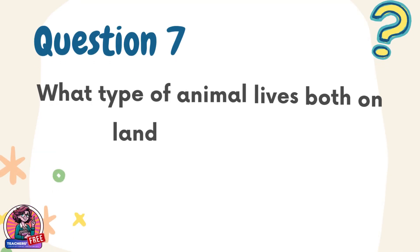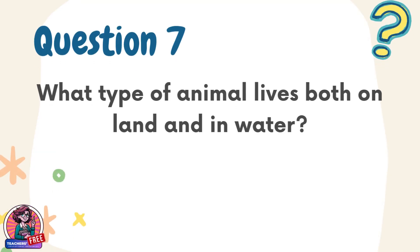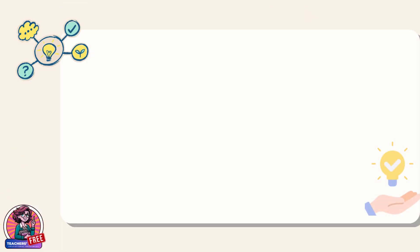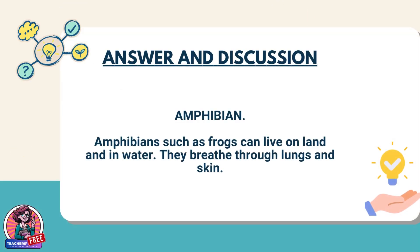Question 7. What type of animal lives both on land and in water? Answer: Amphibian. Amphibians such as frogs can live on land and in water. They breathe through lungs and skin.